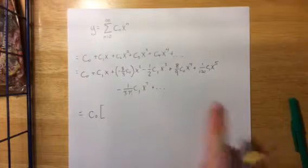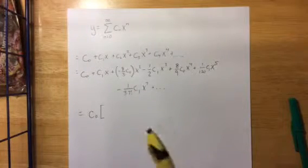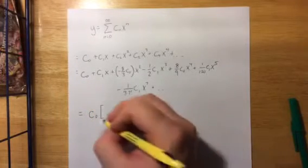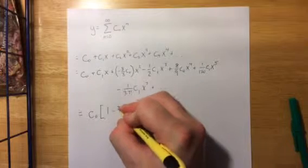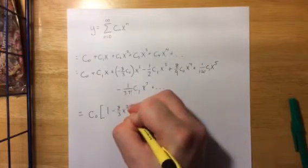So all of the terms that contain a c₀, we're going to group them all together. The first term contained a c₀, that gave us a 1 if we factor it out, and we'll have -8/3 x².